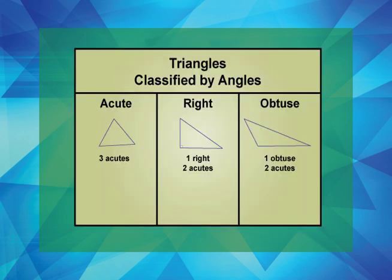This table summarizes the three categories of triangles. Acute triangles have three acute angles. A right triangle has one right angle and two acute angles. An obtuse triangle has one obtuse angle and two acute angles.